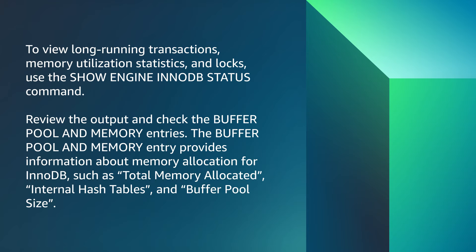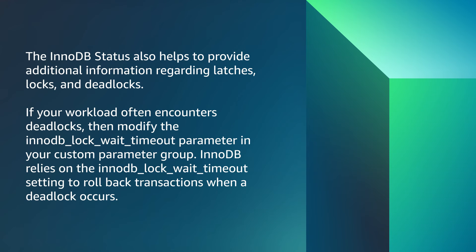Review the output and check the Buffer Pool and Memory entries. The Buffer Pool and Memory entry provides information about memory allocation for InnoDB, such as total memory allocated, internal hash tables, and buffer pool size. The InnoDB status also provides additional information regarding latches, locks, and deadlocks. If your workload often encounters deadlocks, modify the InnoDB lock wait timeout parameter in your custom parameter group, as InnoDB relies on this setting to roll back transactions when a deadlock occurs.